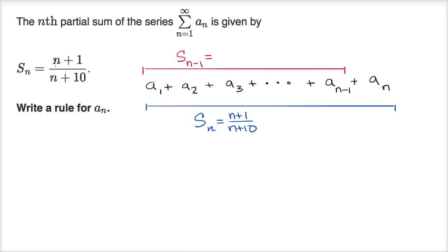And what would that be equal to? Well whenever we see an n, we'd replace it with an n-1. So it'd be (n-1+1)/(n-1+10), which is equal to n/(n+9). So if you subtract the red stuff from the blue stuff, all you're going to be left with is the thing we want to solve for. You're going to be left with a_n.